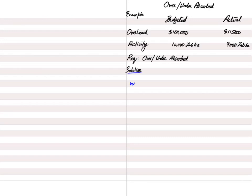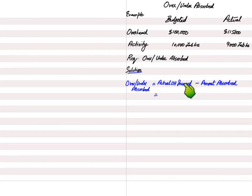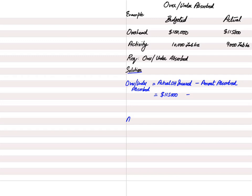To calculate over and under absorption, we use the formula: actual overhead incurred minus amount absorbed. Actual overhead incurred is the actual overhead spent during the year, which in this question is $115,000. The amount absorbed is calculated using a second formula: OAR multiplied by actual activity.